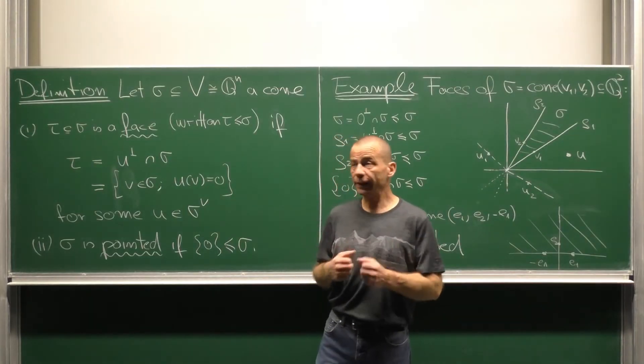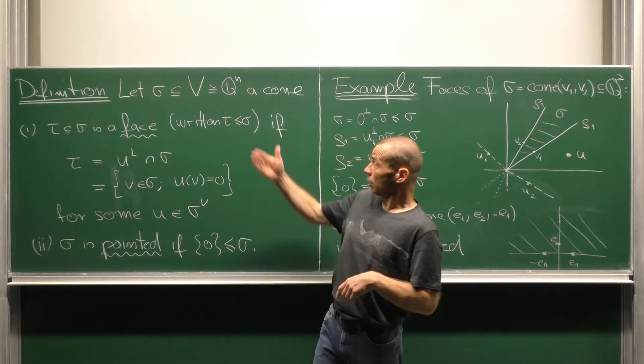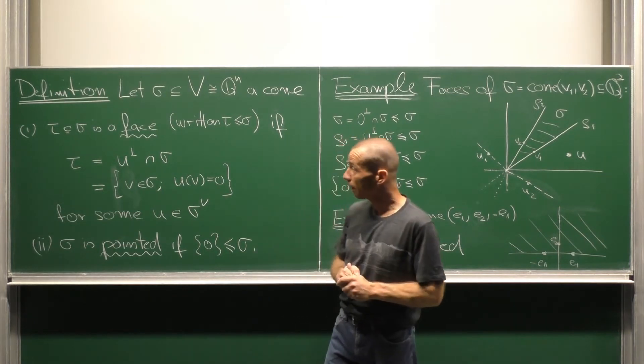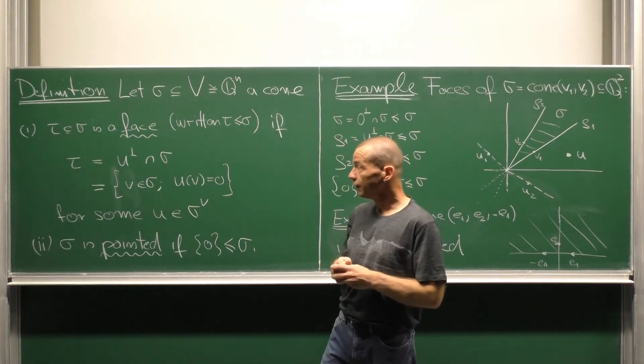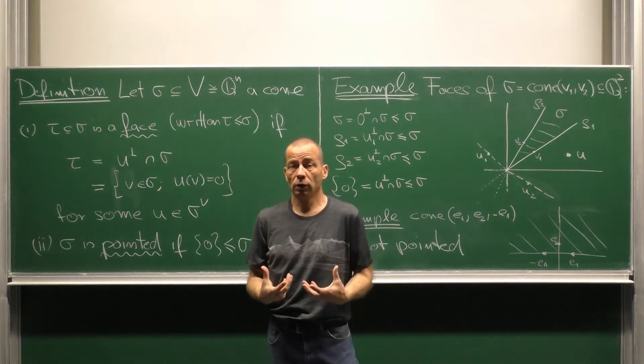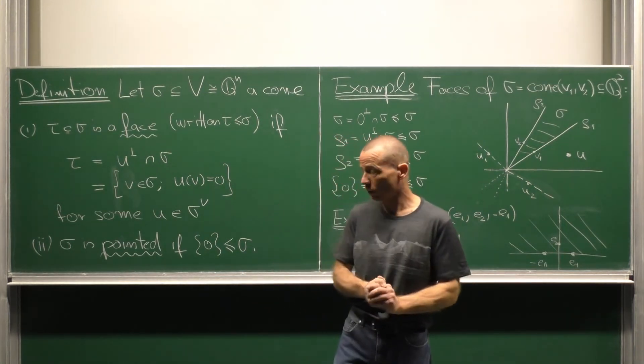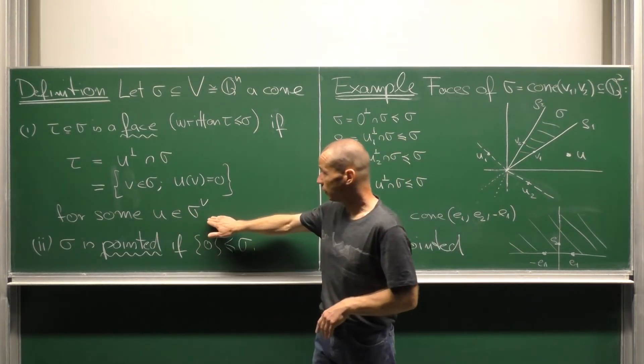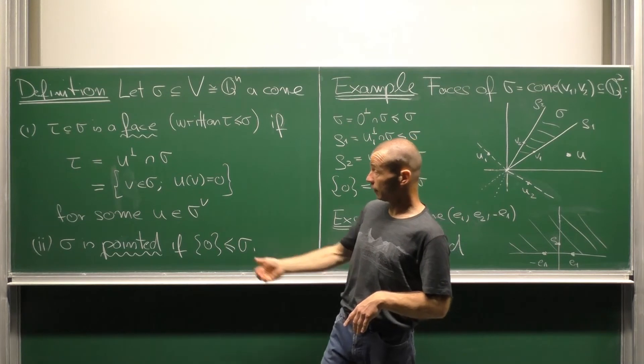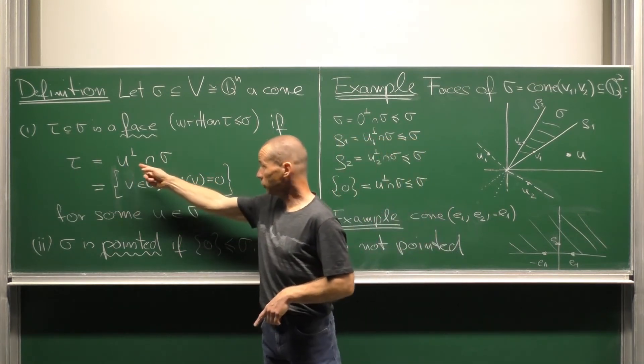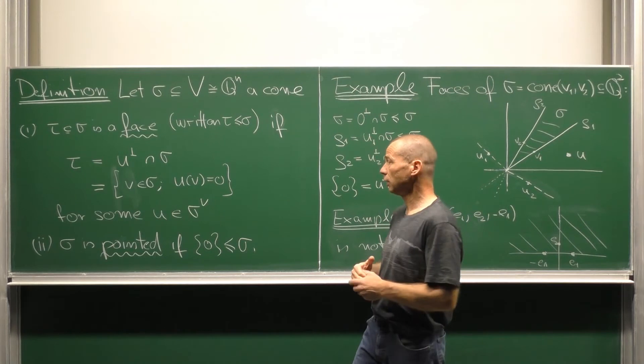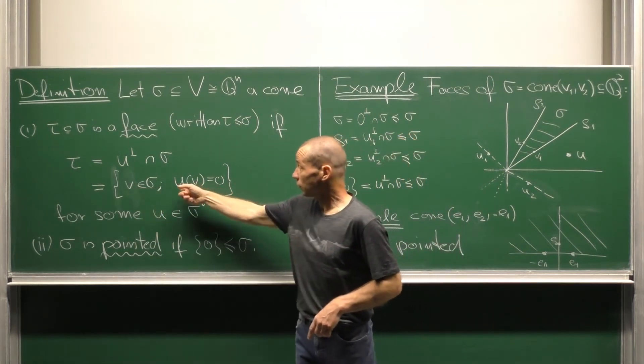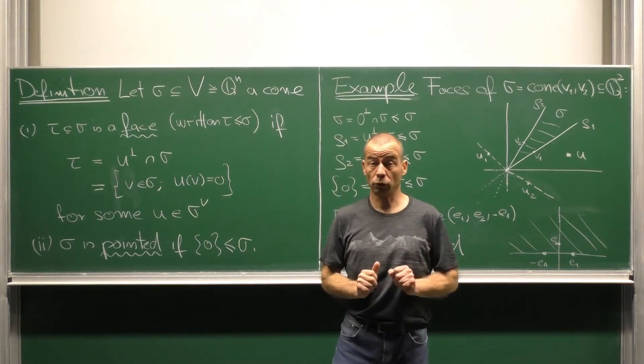We need the concept of a face of a cone. So consider a cone sigma in a rational vector space v. A subset tau is called a face if it is cut out by a linear form coming from the dual cone. That means there must be a u in the dual cone such that tau is the perpendicular space of u intersected with sigma, meaning that tau consists of all the elements of sigma such that u evaluates to zero on v.